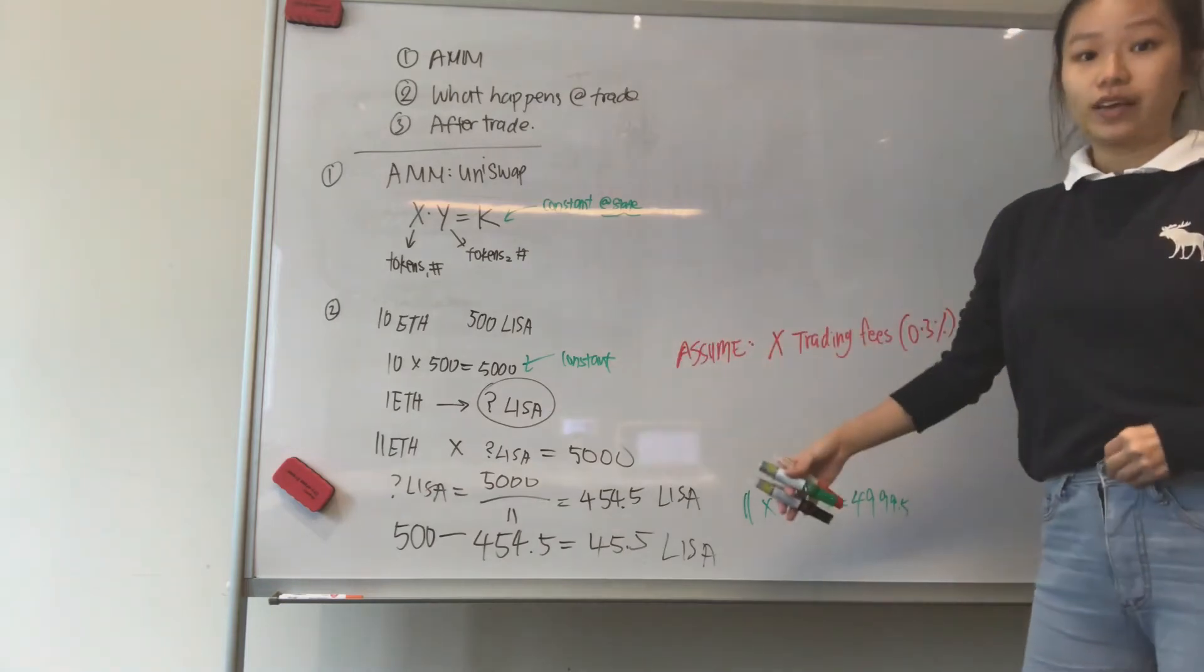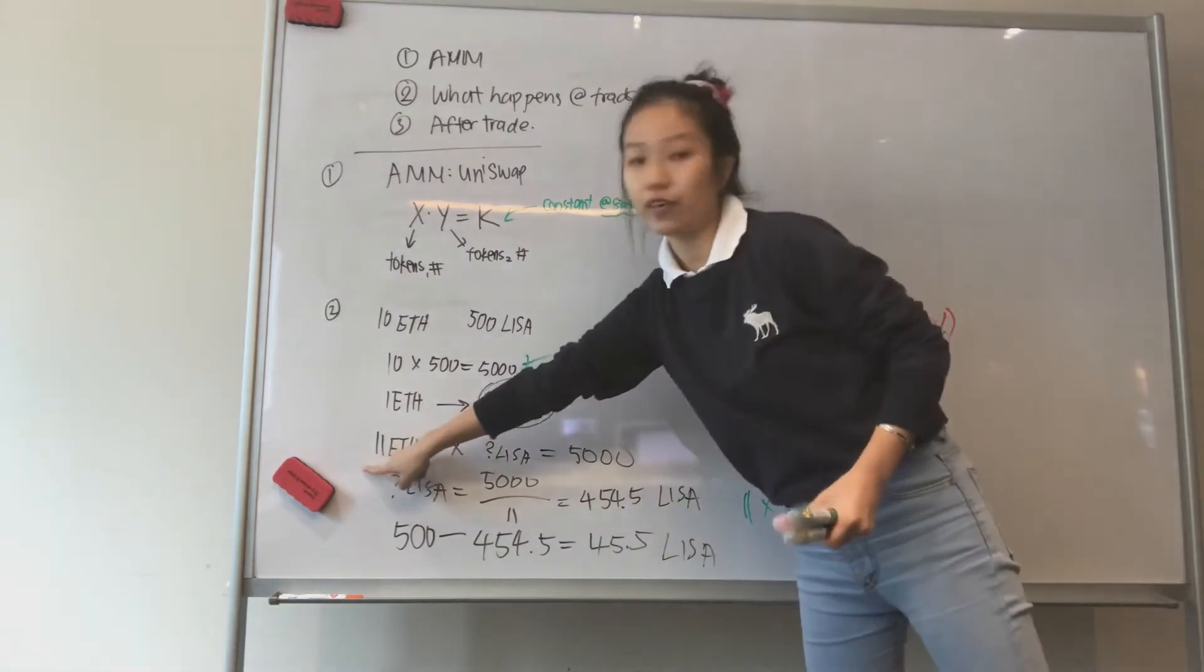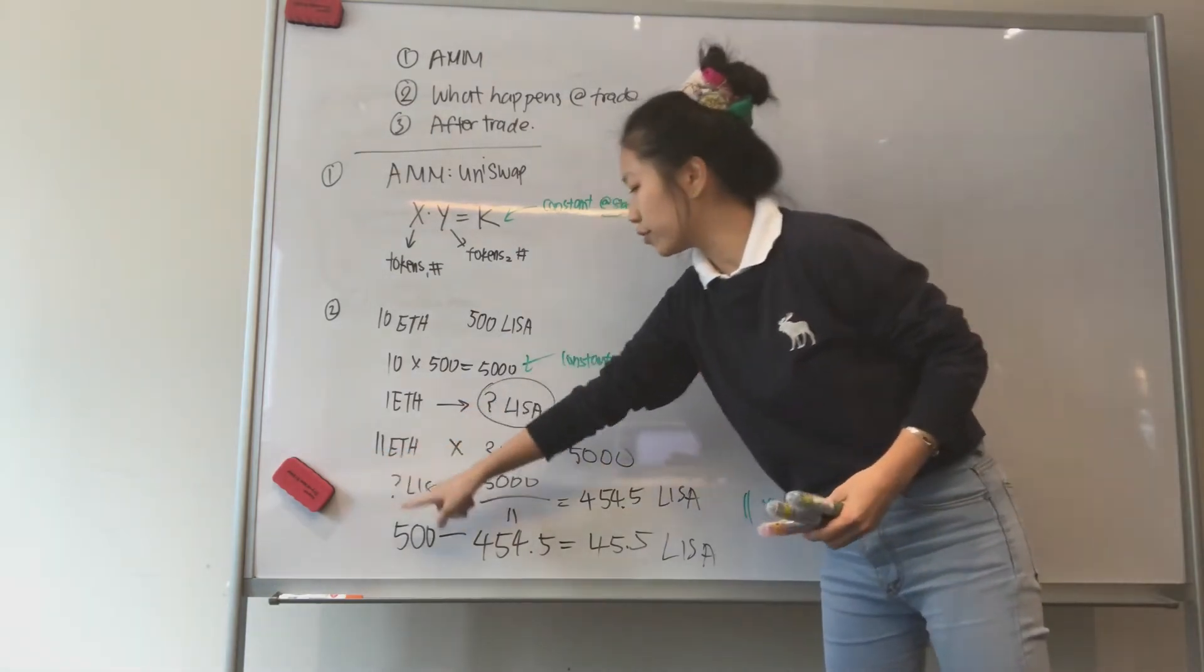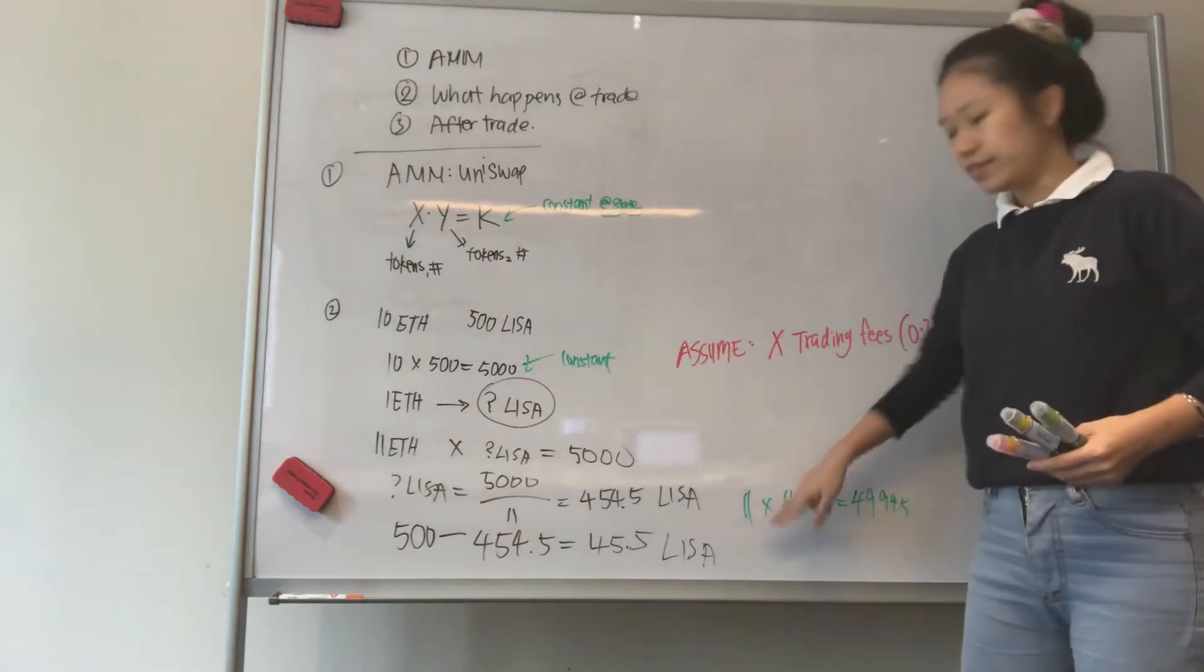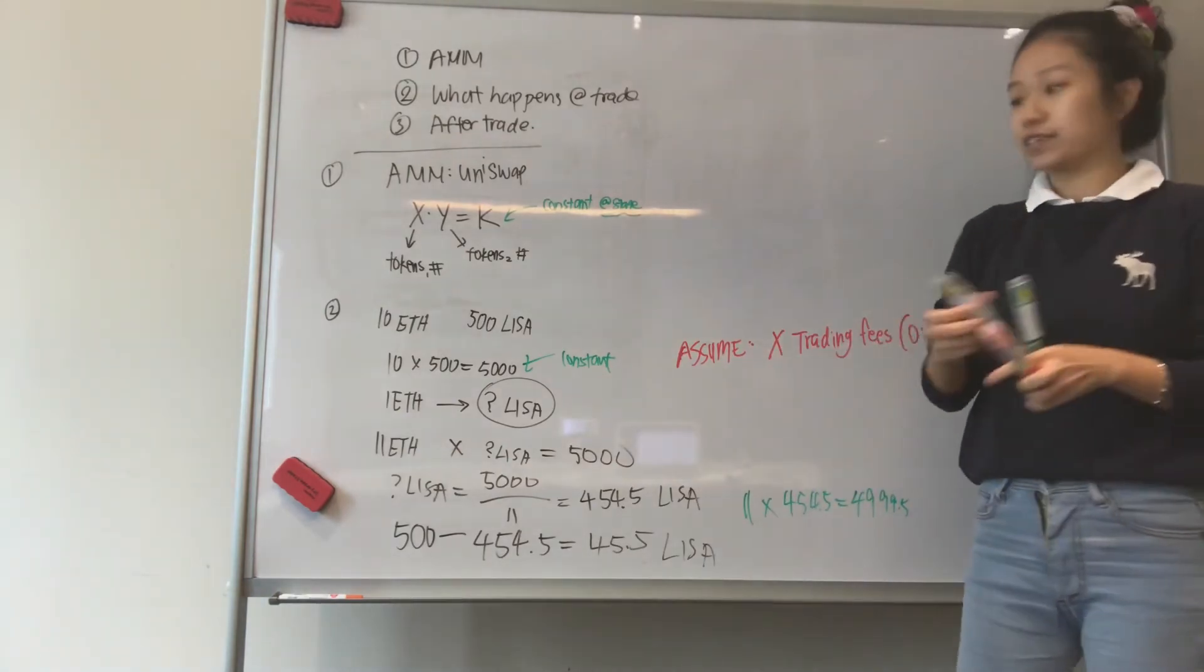This is the transaction. You can do one more if you want. To do 12 ETH. So if you increase 12 ETH, how much LISA tokens can you get out? So you can do that on your own. But let's talk about risk first.